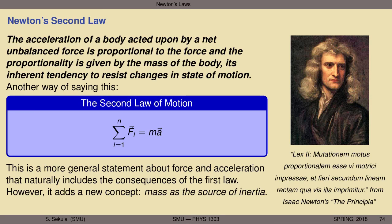Newton's second law is a relationship between a vector sum of forces and the change in the state of motion, and this brings back the concept of inertia. The feather and the bowling ball can both have their states of motion changed — one requires very little force, the other requires a great deal. The property that one has more of than the other is inertia. Newton's second law codifies this mathematically and gives us a quantity we can go out and measure — relating accelerations to the forces that caused them, and determining the physical content of inertia.